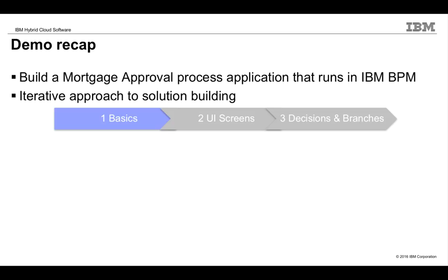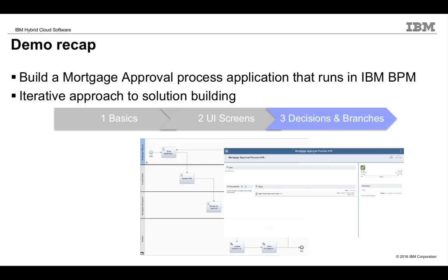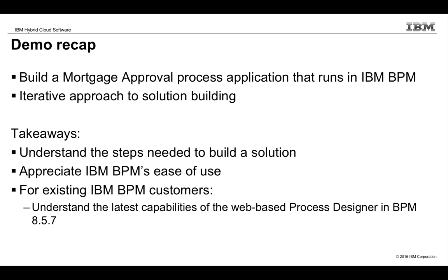In iteration one, we did the basics by laying out the initial process flow and showing you how to play back the process. In iteration two, we built rich user interface screens for the human workflow steps. In iteration three, we changed the process by adding a decision and multiple branches. Hopefully you now understand the steps needed to build a solution in IBM BPM, you appreciate IBM BPM's ease of use, and if you're an existing customer, you understand the latest capabilities of the web-based Process Designer. Thank you very much. Have a good day.